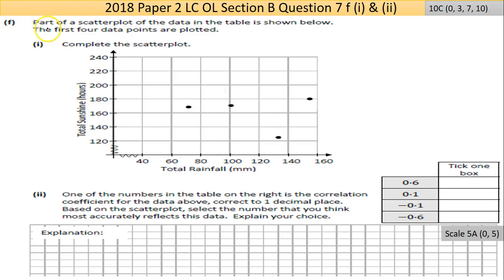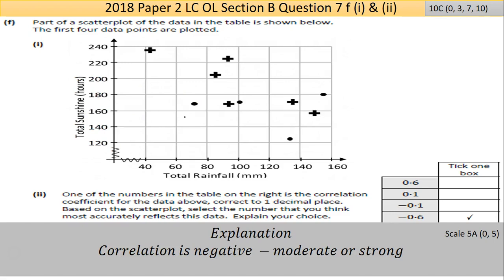Part F: you're asked to look at the scatter plot of the data — the first four points are already plotted — and plot the remaining points. The axes are total sunshine versus total rainfall for each June. The remaining six data points are plotted as shown on the answer page. It wouldn't be the worst thing to label each year beside the point you plot, just make sure it's nice and clear.